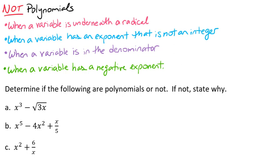So let's look at our example here. We're going to determine if the following are polynomials or not, and if they're not, we're going to say why they're not. So in our first example we have x to the third minus the square root of 3x.